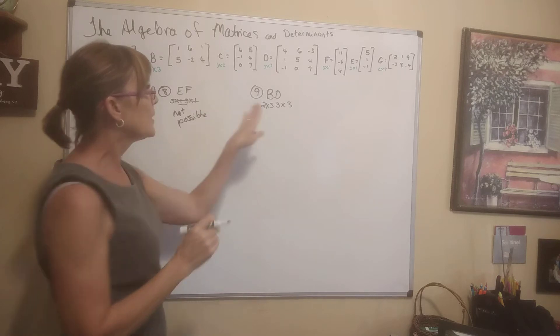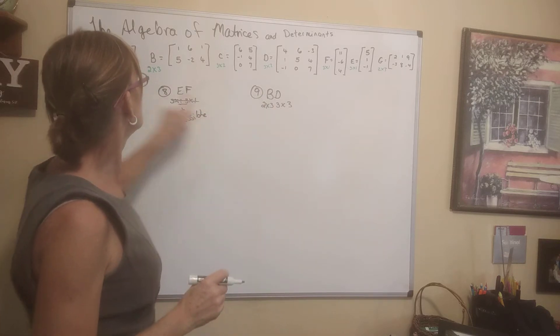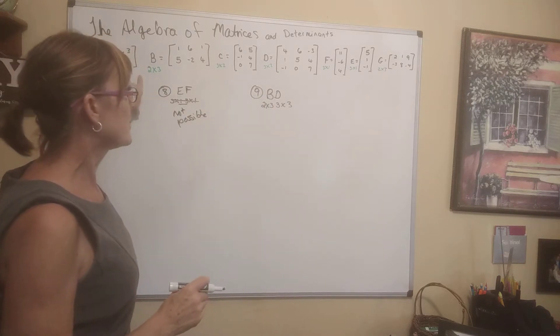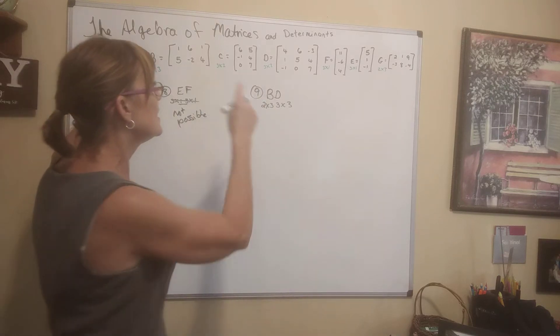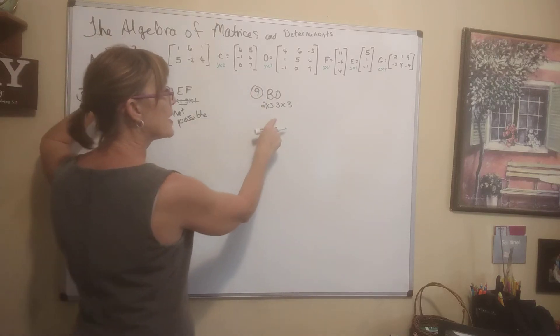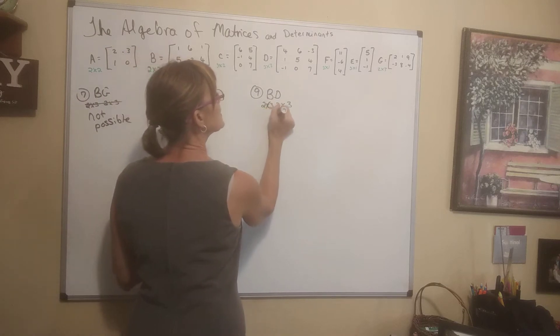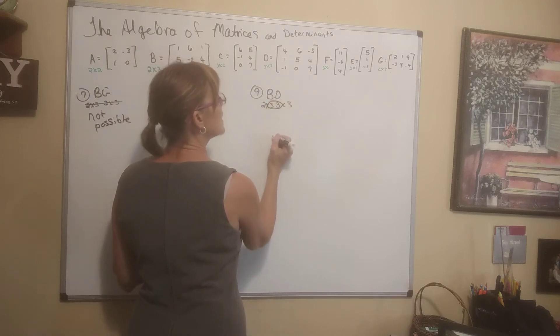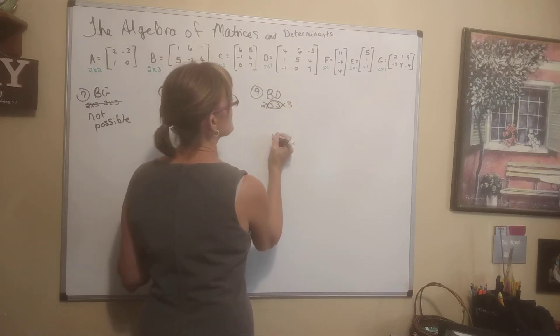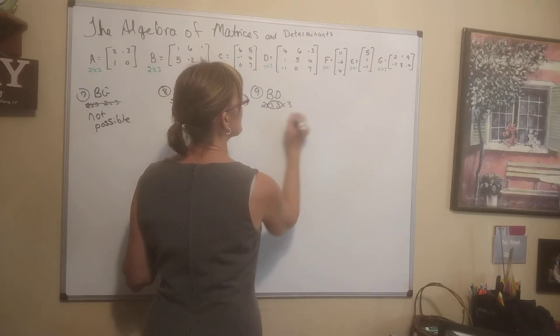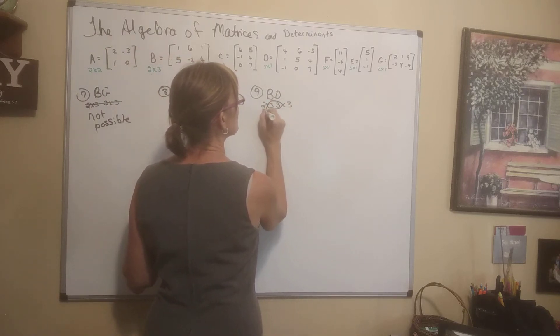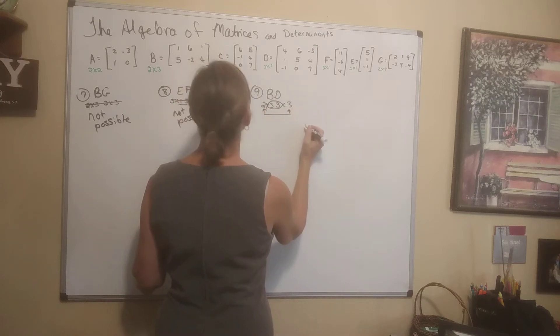B times D. B is a 2 by 3, D is a 3 by 3. The inner dimensions match — this is possible. The resulting matrix will be a 2 by 3.